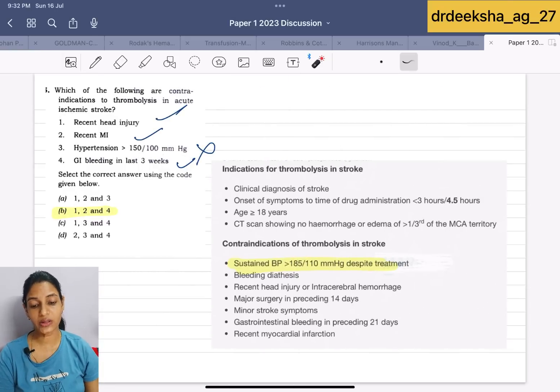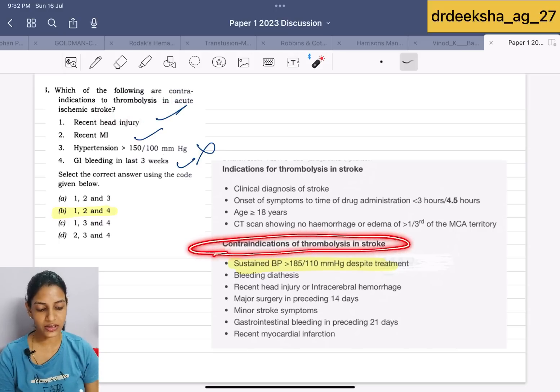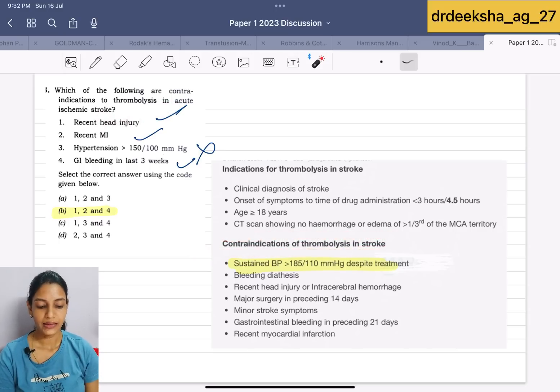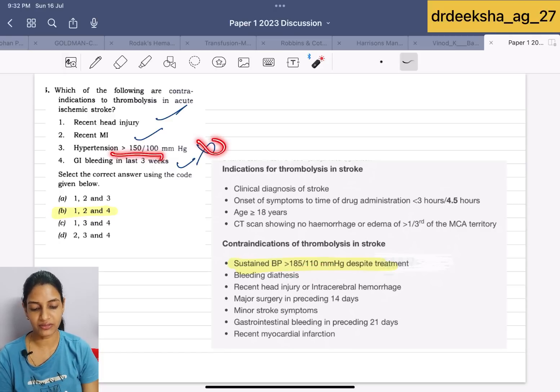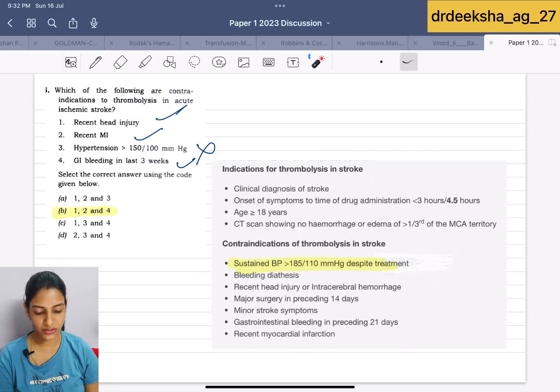Next question they are talking about the contraindication to thrombolysis in acute ischemic stroke. The contraindications for thrombolysis in stroke is the BP should be more than 185 by 110 and they are giving more than 150. Then this statement is wrong. Rest 3 are true. Why? Because we have the recent MI, recent head injury and GI bleeding in the last 3 weeks. Answer for this is 1, 2 and 4.